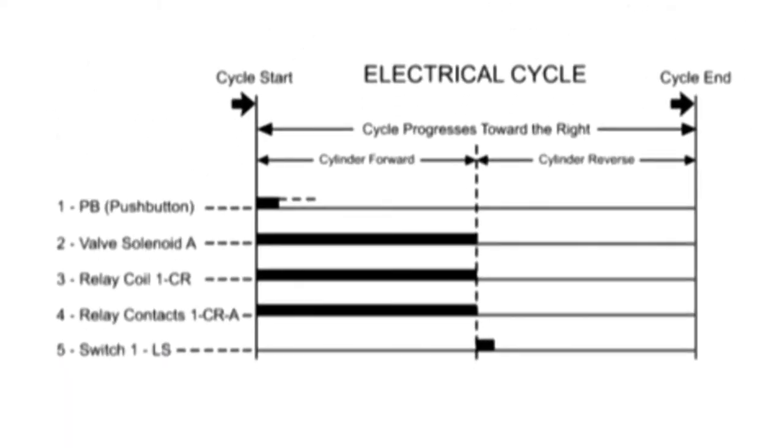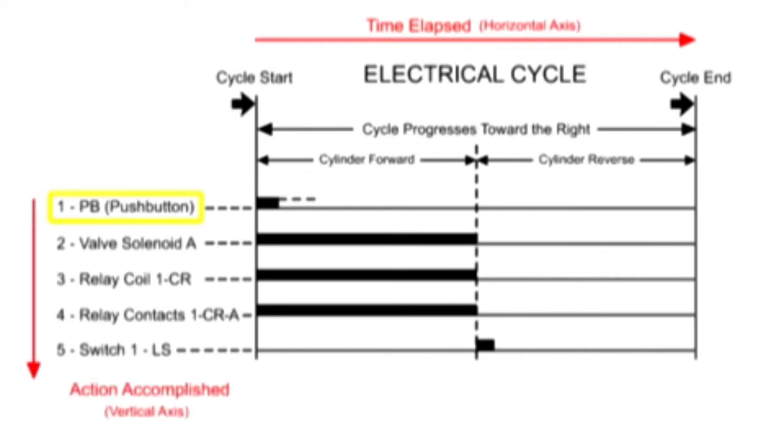While there is no official standard for drawing a sequence diagram, most are drawn with the time elapsed on the horizontal axis and the action accomplished on the vertical axis.